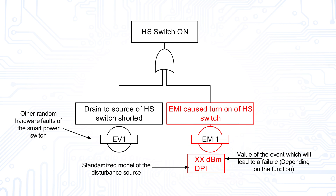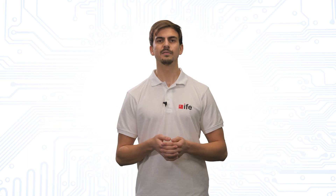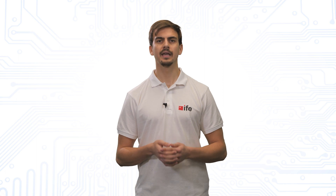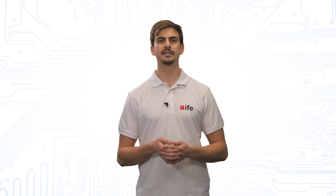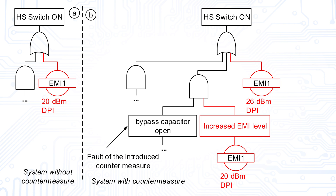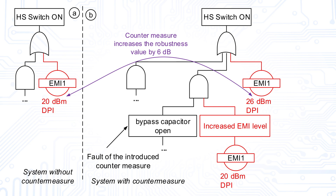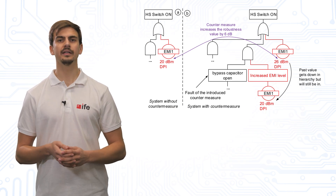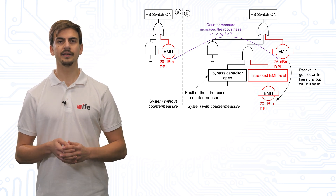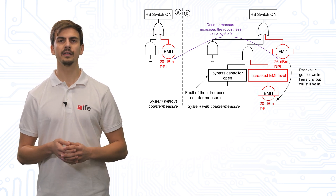Additionally, we assign the susceptibility of the corresponding function to the initiator. Since more than one source of interference can exist, several interference models have to be used. Special for EMI is that depending on the countermeasure, the EMI initiator will not change its position in the fault tree, but will change the susceptibility level and therefore the failure rate. An additional EMI initiator has been added. Note that the two initiators are not independent from each other, which has an additional influence on the FIT rate of the system.